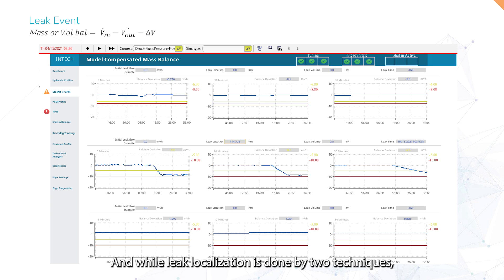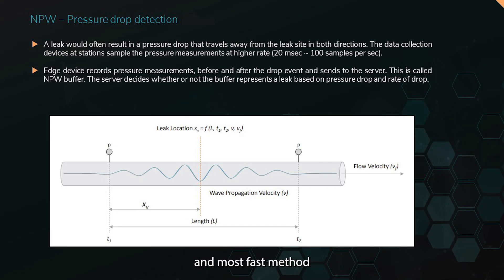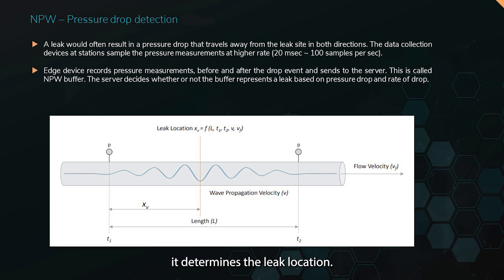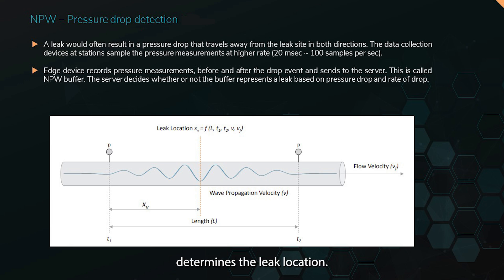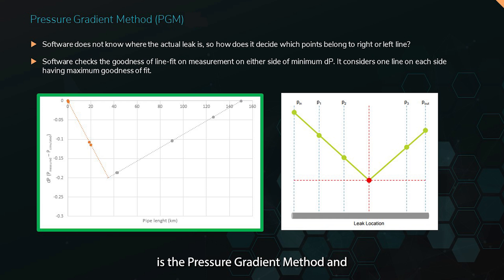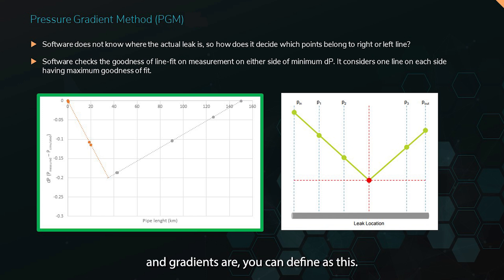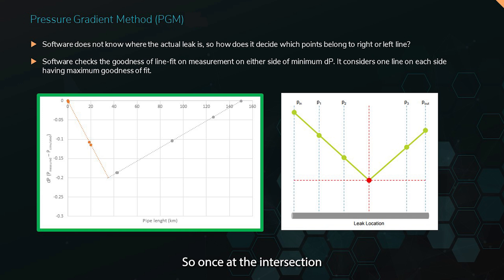Leak localization is done by two techniques: the negative pressure wave method, or NPW, and the pressure gradient method, or PGM. The NPW method is generally more reliable and faster for localizing a leak because it accounts for the speed of sound in the product and uses the time-of-flight method to determine leak location. It takes high-sampling-rate data from pressure instruments and sends it to the LDS server, which runs further calculations to precisely determine the leak location. The pressure gradient method complements NPW by plotting gradients on both sides of the leak — defined as the difference between pressure measurements under leak and no-leak conditions — and the software calculates the leak location at the intersection of those gradients.